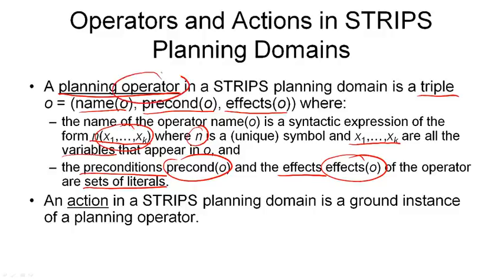An operator is generic in the sense that it only specifies what is manipulated as variables. An action, on the other hand, is specific because it is a ground instance of a planning operator. If we take all the variables and choose values — objects in our domain — for these variables, then our operator becomes an action. Of course, there can be many actions that are instances of the same operator in our planning domain.